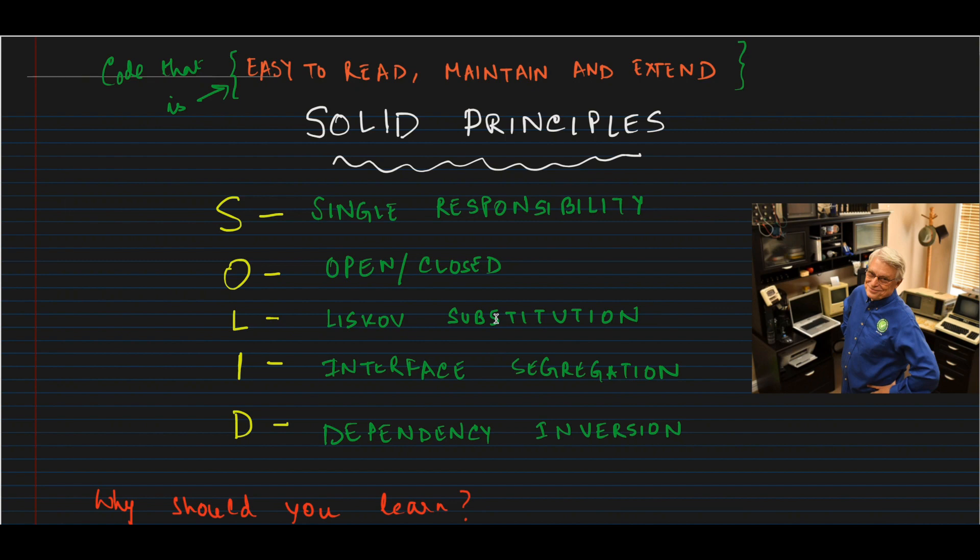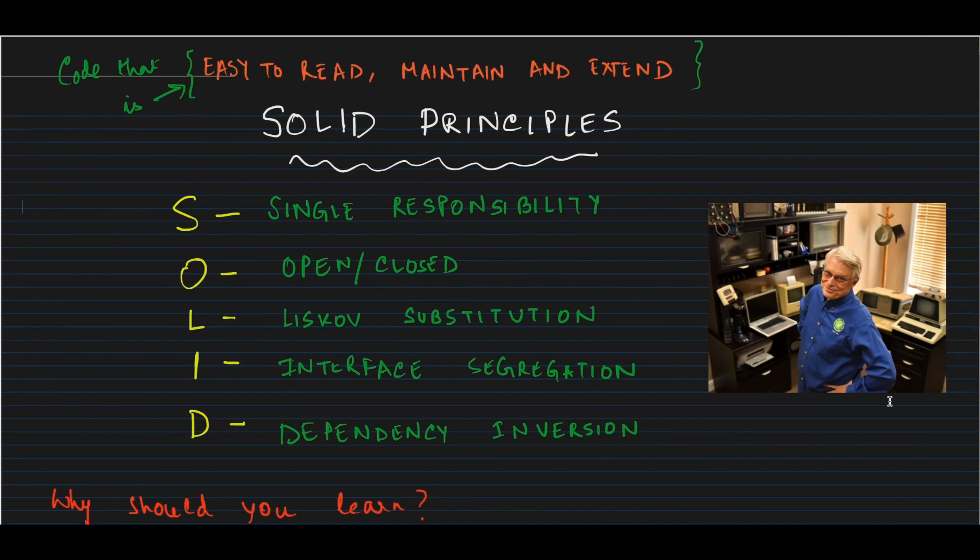First of all, what are SOLID principles? The definition says it is a set of five design principles for object-oriented programming and these were introduced first by this person. He is famously known as Uncle Bob but his name is Robert C. Martin. So it was introduced by Robert C. Martin in early 2000s.